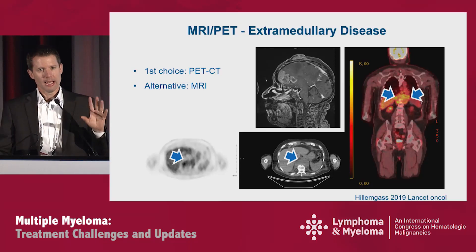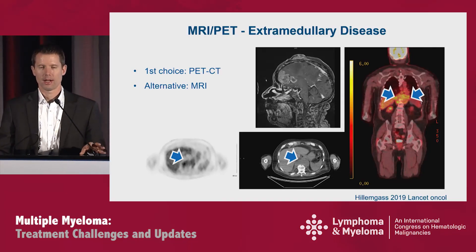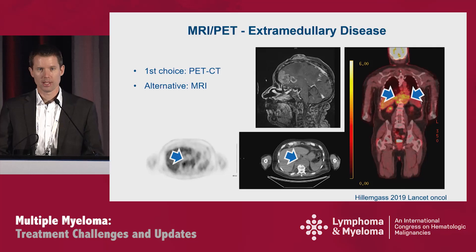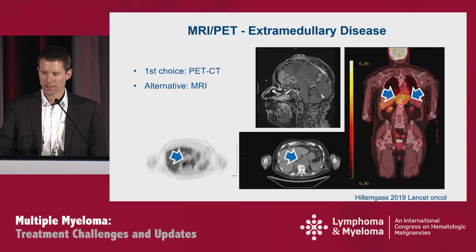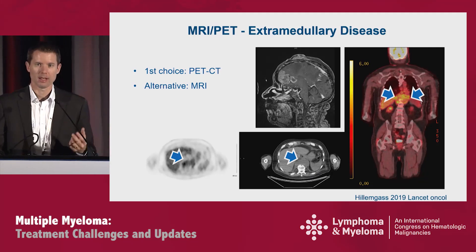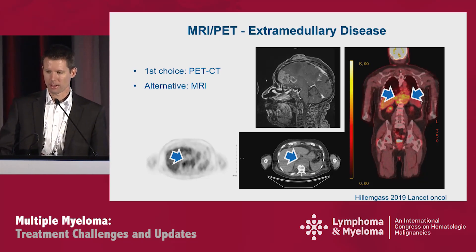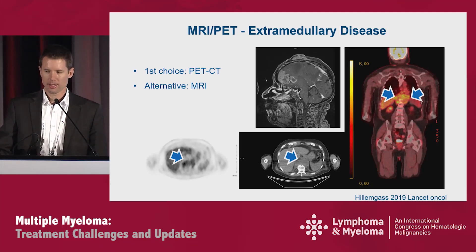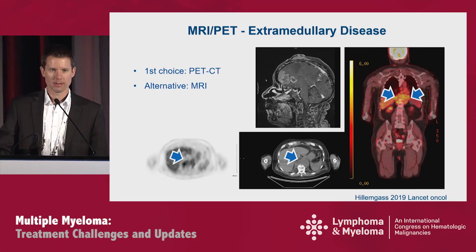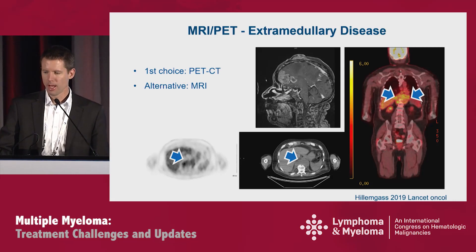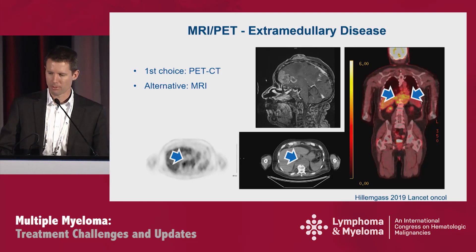Soft tissue involvement happens at first diagnosis, but is much more common in later relapses. Here are several images of patients who had severe pain and in whom the diagnosis was found with sophisticated imaging. PET-CT is what we recommend in our new guidelines. But if you don't have access to PET-CT, MRI is also very helpful — especially in the brain, which hopefully doesn't happen very often.